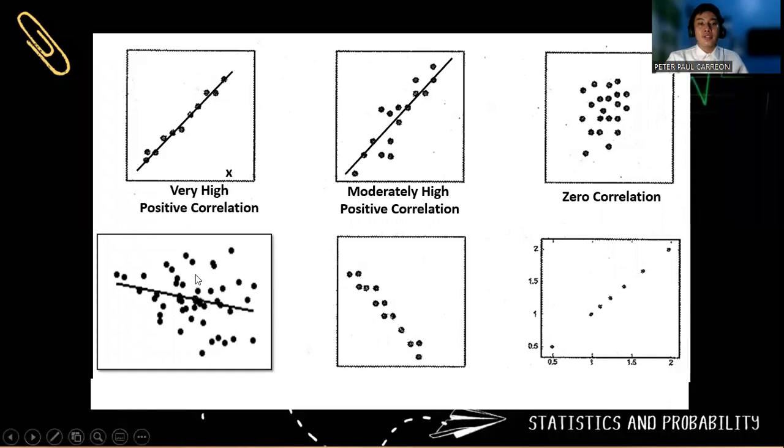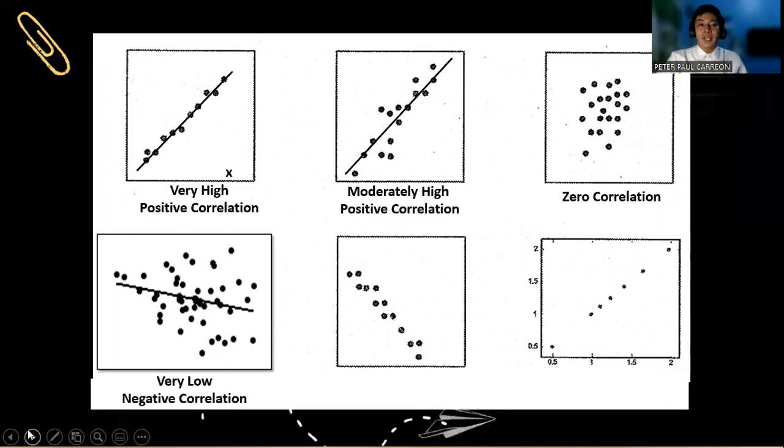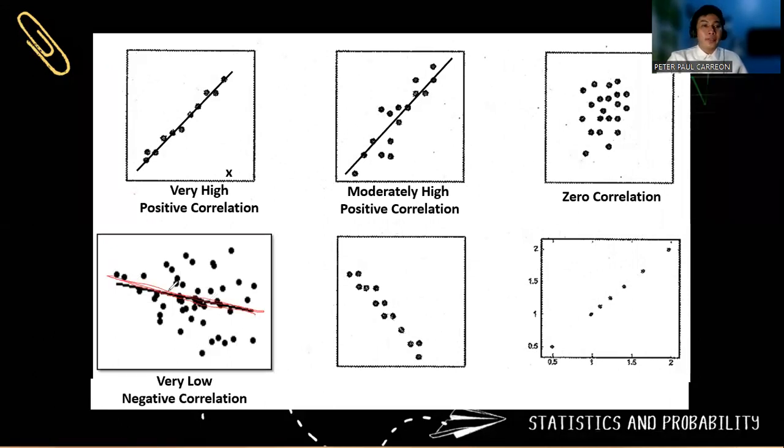Next, look at that line. Okay, so this is a very low negative correlation. Look at the direction of a negative correlation. It leans to the left. So the direction is negative and the strength is very low.